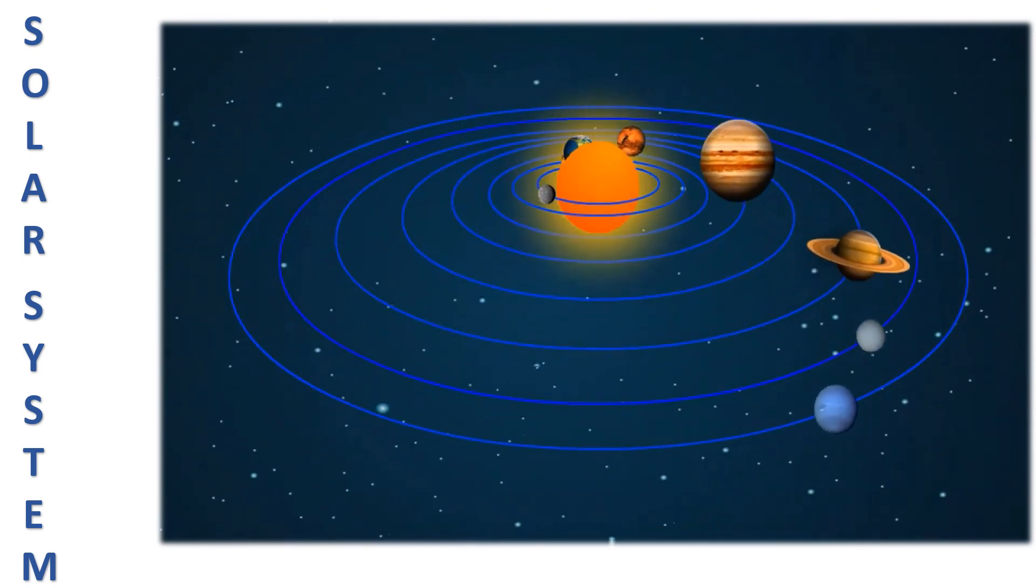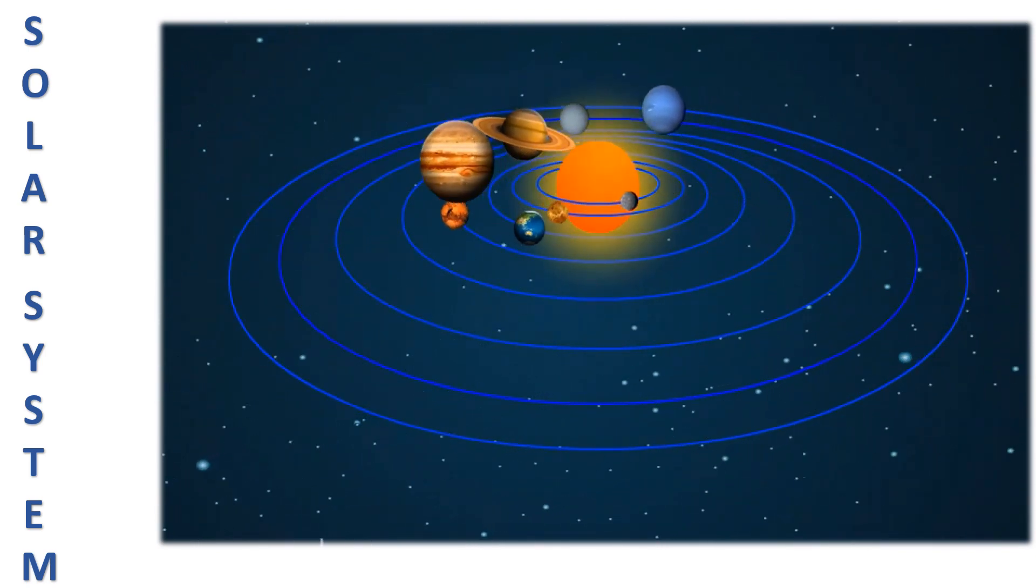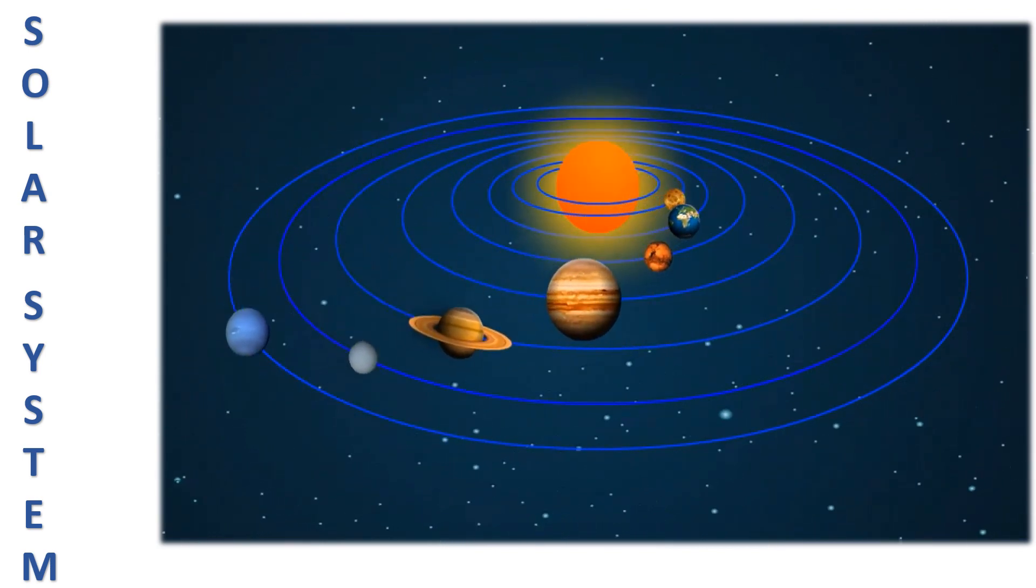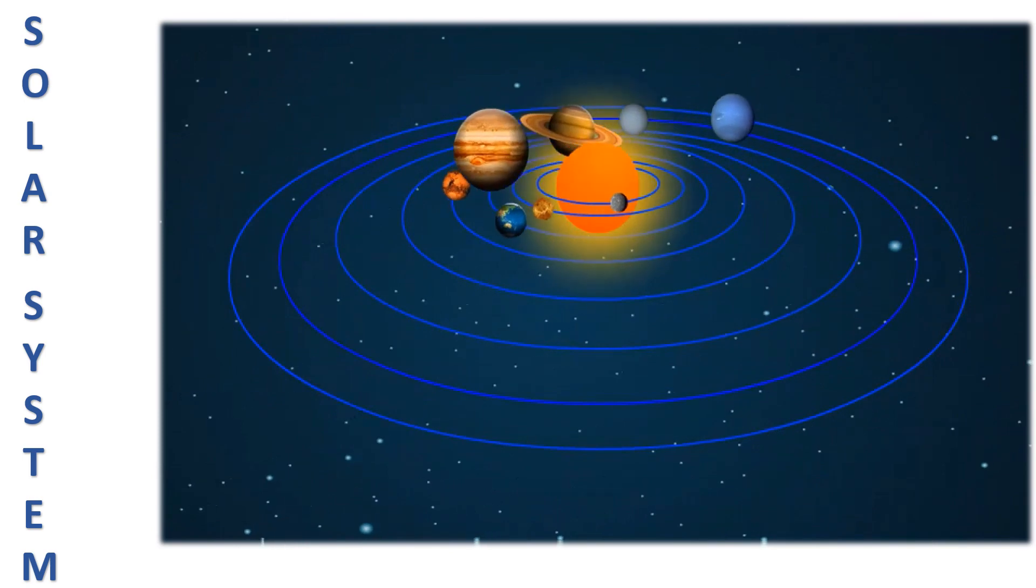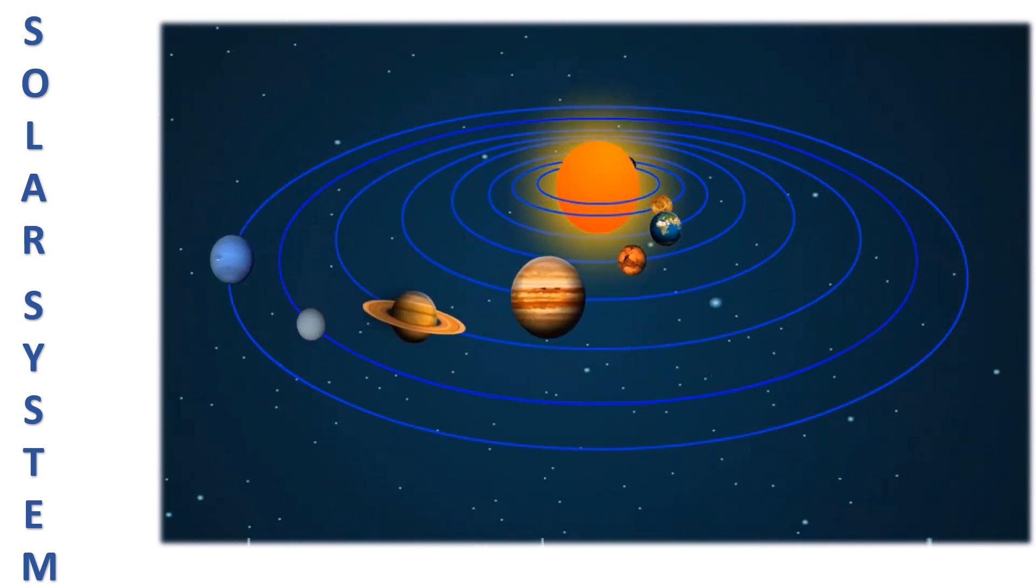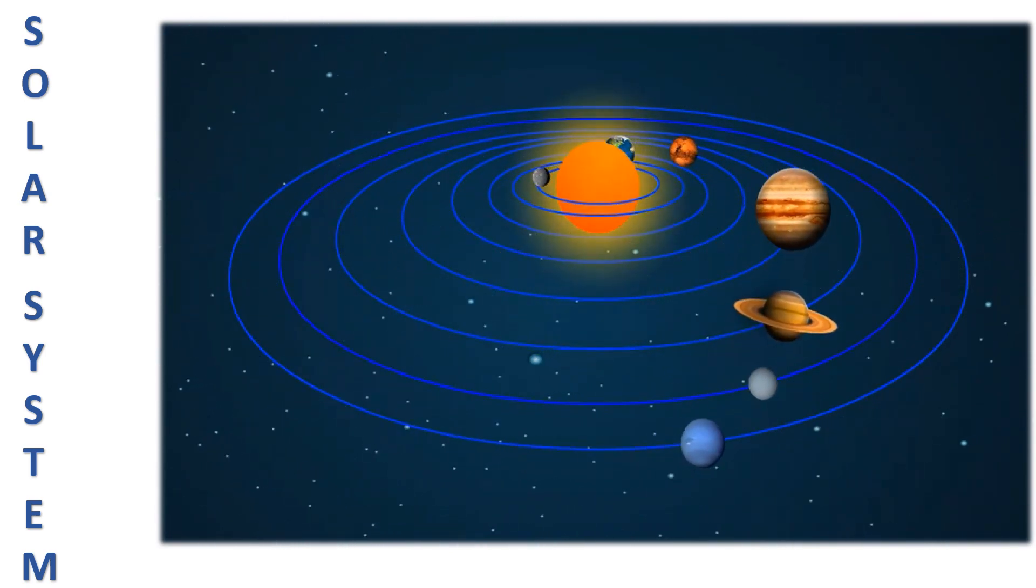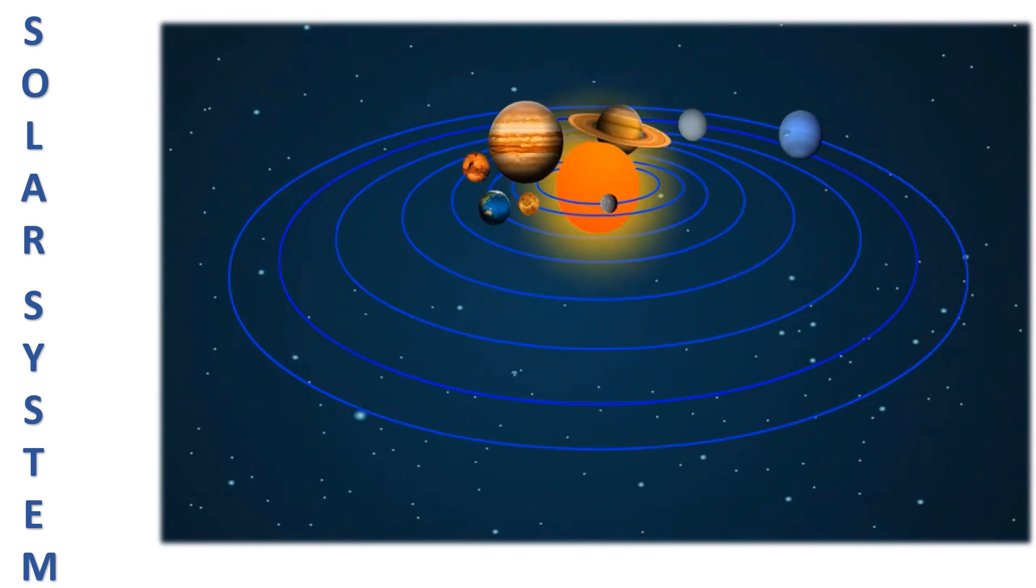Planets circle the sun in fixed paths called orbits. Each planet takes different duration of time to circle around the sun once. Our earth takes a little over 365 days. We call this period of time a year.